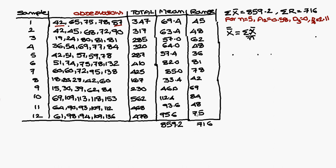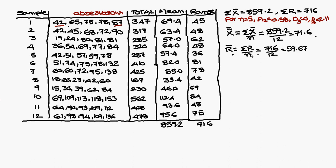The summation of the Means (sigma X-bar) is 859.02, and the summation of the Ranges is 716. X-double-bar equals sigma X-bar divided by n, which is 859.02 divided by 12, giving approximately 71.6. R-bar is summation of Ranges divided by number of samples, giving 59.67.